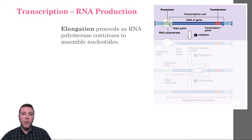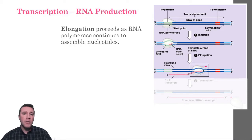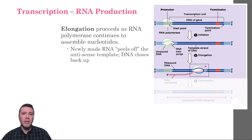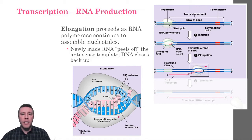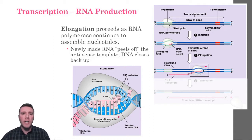During elongation, RNA polymerase moves along the DNA molecule, continuing to untwist and separate the double helix. This exposes about 10 to 20 nucleotides at a time, making them available for base pairing with RNA nucleotides. The enzyme adds nucleotides to the 3' hydroxyl of the growing RNA molecule as it continues to move along. The 5' end of the RNA molecule under construction peels away from the DNA template, allowing the two halves of DNA to re-base pair with one another. In eukaryotes, transcription proceeds at the rate of approximately 40 nucleotides every second.